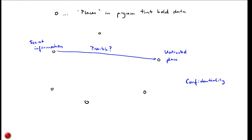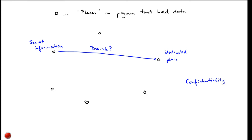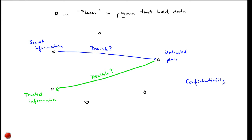The inverse of confidentiality policies are integrity policies, where we have an untrusted place and also a place storing trusted information — information computed in a way where we have control over what data ends up there. Information flow analysis can also check whether it's possible for information to flow from the untrusted place to the trusted place. If the analysis checks that kind of policy, this is an integrity policy.